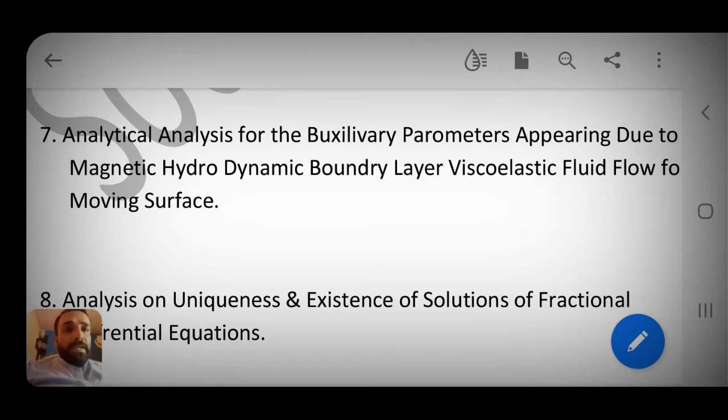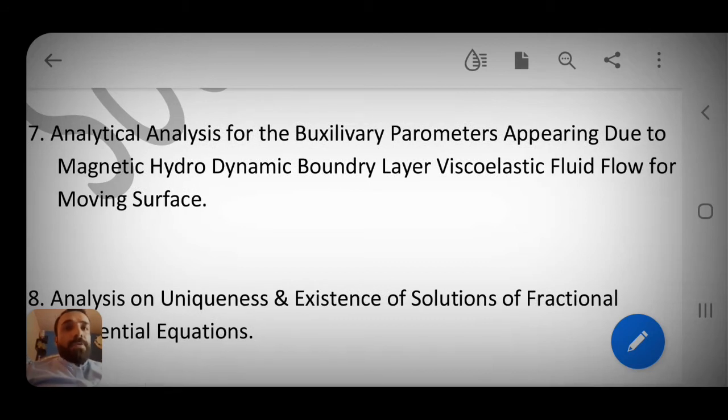The seventh one is analytical analysis for the boundary layer parameters appearing due to magnetic hydrodynamic boundary layer with holistic fluid flow for moving surface.